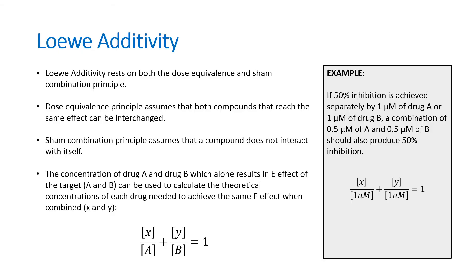Loewe additivity builds on the concepts of dose equivalence and sham combination. The dose equivalence concept assumes that both compounds that reach the same effect can be interchanged. The sham combination concept assumes that a compound does not interact with itself. Mathematically, the concentration of drug A and drug B which alone results in an effect on the target can be used to calculate the theoretical concentrations of each drug needed to achieve the same effect when combined. For example, if 50% inhibition is achieved separately by 1 micromolar of drug A or 1 micromolar of drug B, a combination of 0.5 micromolar of drug A and 0.5 micromolar of drug B should also produce 50% inhibition.